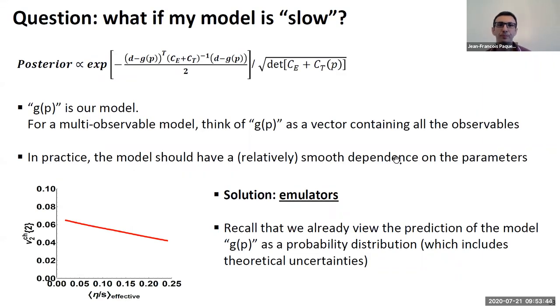So emulators. I mentioned earlier, what do we do when our model is slow? If you can only probe your model for a sample of parameter space, because remember that technically the posterior, when you evaluate it, you assume that you know the prediction of your model for every single point in parameter space. Now, in practice, this is not workable.